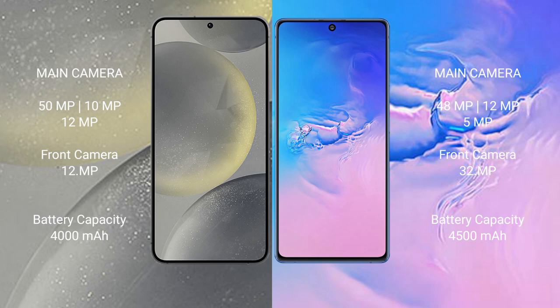Samsung Galaxy S24 front camera is 12 megapixels. Samsung Galaxy S10 Lite rear triple camera set of 48 megapixels plus 12 megapixels plus 5 megapixels, front camera 32 megapixels. Samsung Galaxy S24 has a 4000mAh battery with 25 watt fast charging support. Samsung Galaxy S10 Lite has a 4500mAh battery with 25 watt fast charging support.